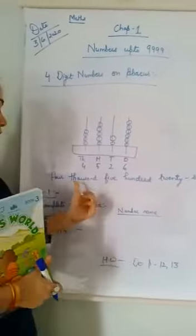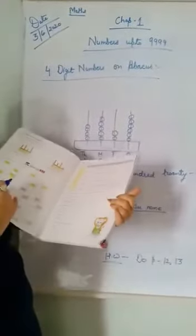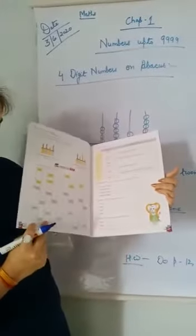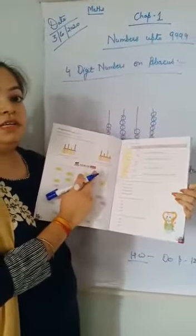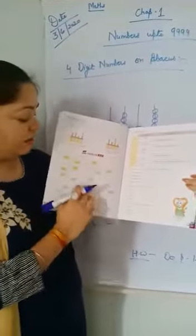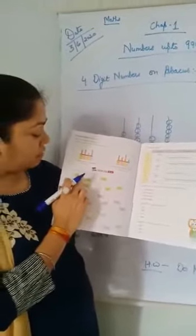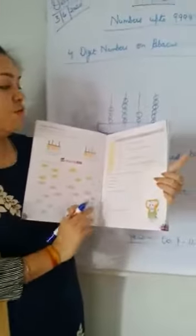Come to page number twelve, exercise number one point one. Firstly, you have to complete the missing numbers. You can easily do it by your own. This is your homework on page number twelve.